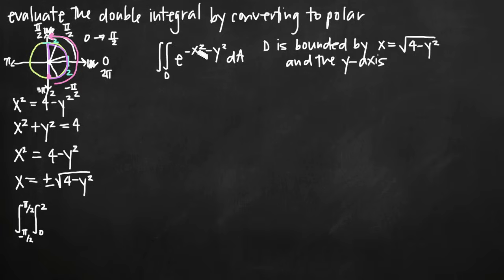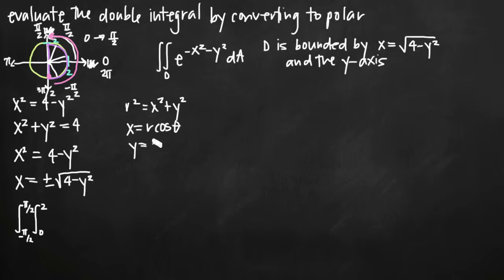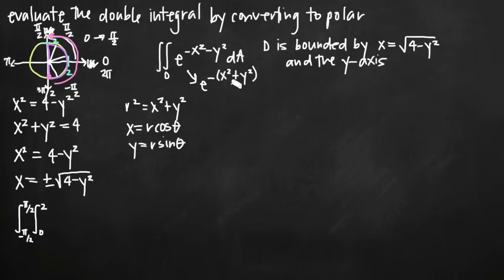Now for the actual function, e to the negative x squared minus y squared, we have a conversion formula: r squared equals x squared plus y squared. If we factor out a negative from the exponent, we get e to the negative times (x squared plus y squared). Since x squared plus y squared equals r squared, we can substitute and call this e to the negative r squared. That's how we convert our function from Cartesian to polar coordinates.